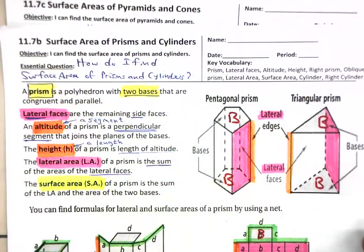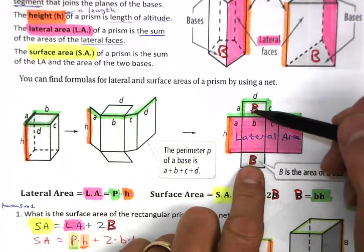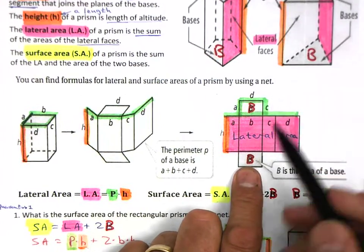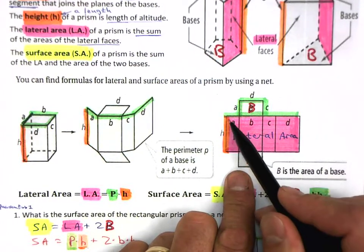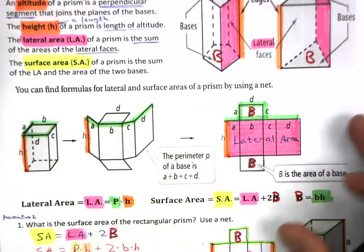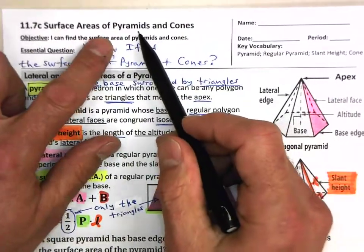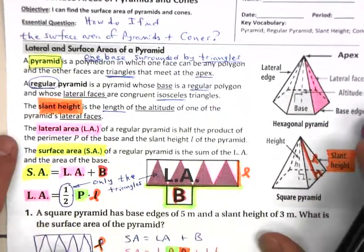Remember how we had to create these nets, and we had two bases there. Therefore, our lateral area, we wanted this entire rectangle. Now, when we are coming to, let's look at pyramids to start out with, same concept.